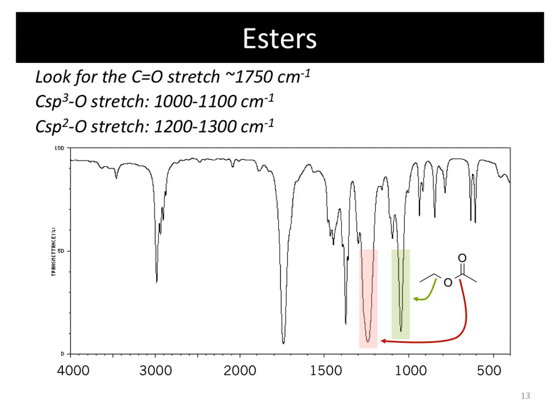Finally, if you have an ester, you can look down into the fingerprint region to find a couple of characteristic C-O stretches. The sp3 carbon bonded to an oxygen shows up between 1,000 and 1,100 wave numbers. You also have the sp2 carbon bonded to the oxygen, and because the carbon is different, the stretch shifts and shows up between 1,200 and 1,300 wave numbers.